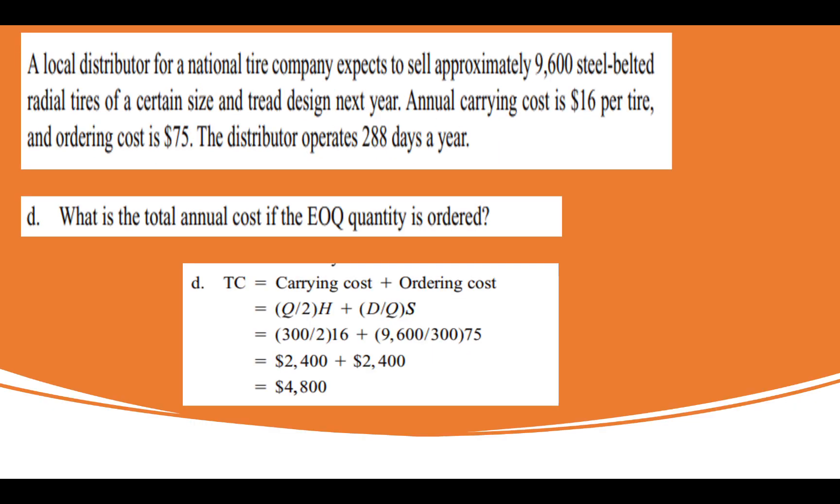If you have to calculate the total cost if the EOQ quantity is ordered, this is the formula. Now you know all the values. Q is 300, H is 16, D is 9,600, Q is 300 again, S is 75. When you calculate total cost, it will be $4,800. Notice that you were calculating total cost at Q, that is at 300. So notice this thing: at EOQ, the carrying cost and the ordering cost, they both are equal, and total cost is coming out to be $4,800.